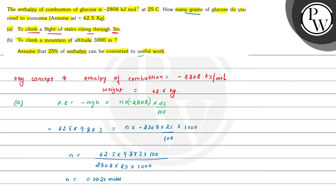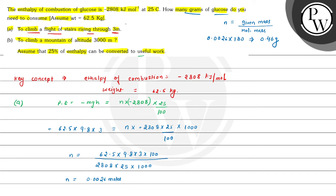Now we calculate how many grams of glucose. Number of moles equals given mass divided by molecular mass. So given mass equals 0.0026 moles multiplied by the molecular mass of glucose, which is 180. The given mass comes out to be 0.46 grams. This is the answer of Part A: 0.46 grams.